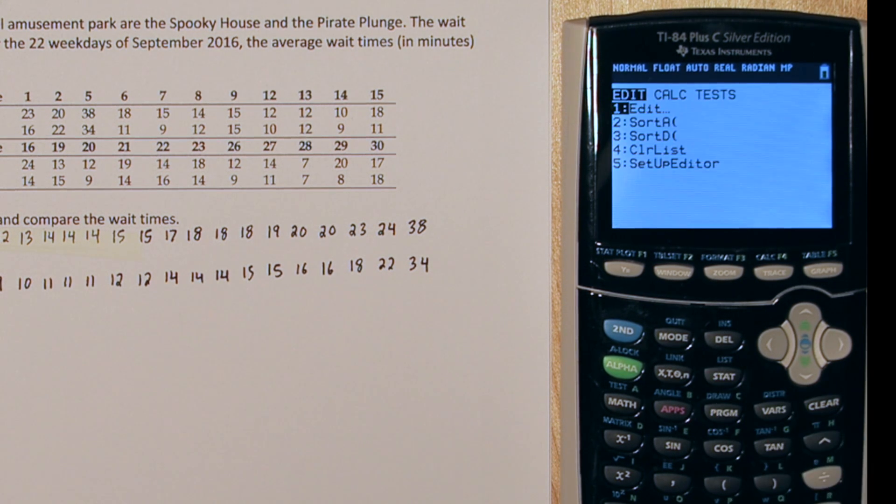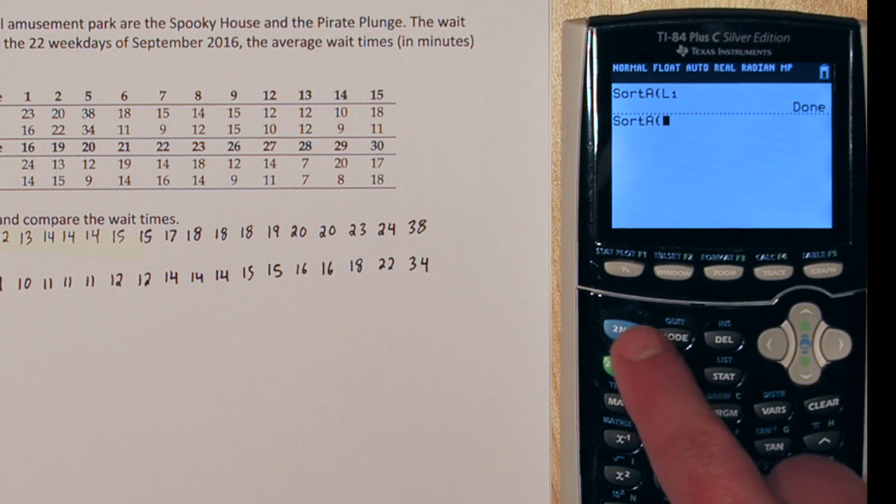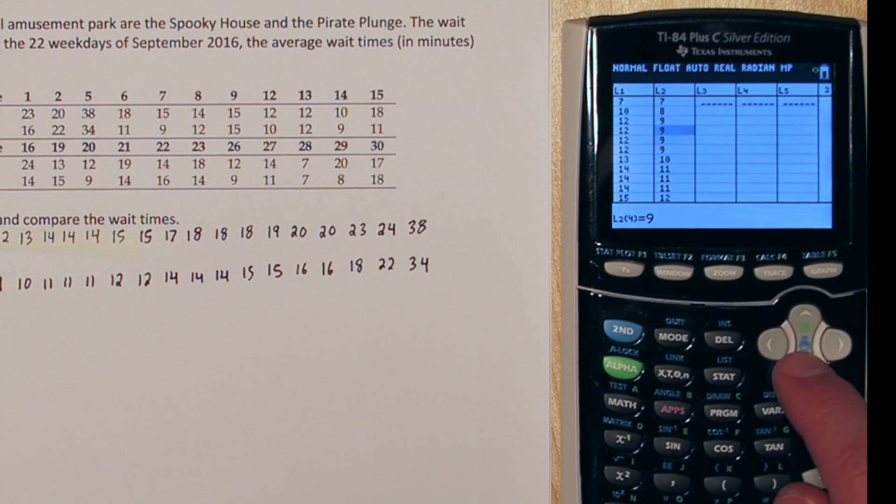Now press the STAT button again. Go down to sort A. This is for sort ascending. And after we push it, if we press 2nd and list 1, we can actually sort all of list 1. Now we'll press STAT again and do the same thing for list 2. Now if we press STAT and EDIT, we can see our data has been sorted from least to greatest.